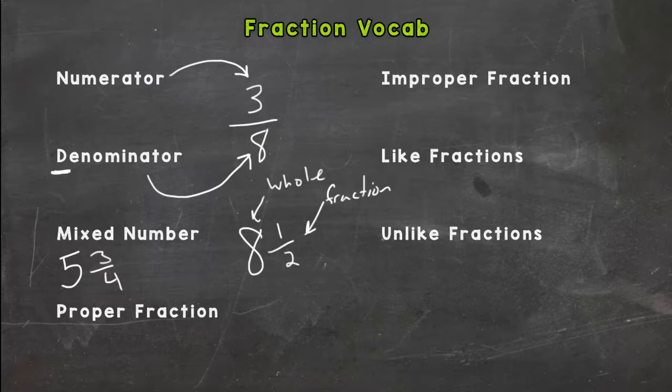Proper fraction means that your fraction's numerator is less than the denominator, so the top is less than the bottom. So three-eighths, one-half, four-tenths, that would be a proper fraction.